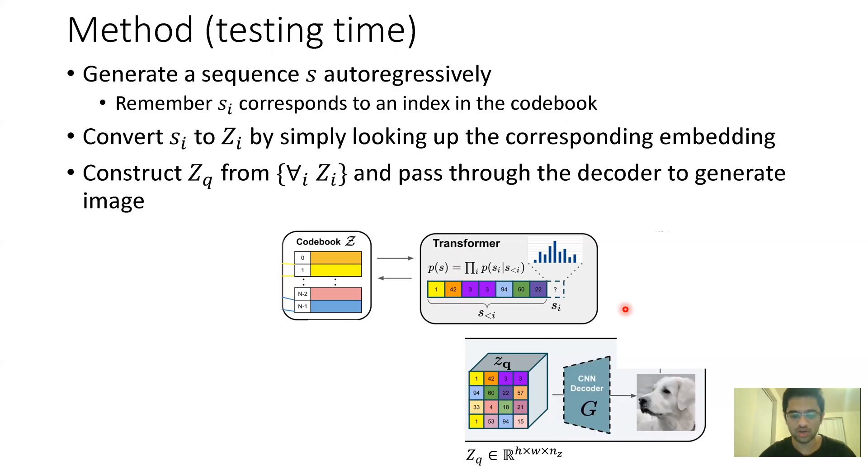At testing time, what you basically can do now, since you have a trained transformer and trained codebook and trained decoder and encoder - well, you don't need the encoder in testing time because you don't get any input - what you basically do is you sample from the transformer. You generate a sequence from the transformer autoregressively, convert that sequence into a Z sub Q type style. The transformer will generate indexes, so it will generate 1, 42, 3 for example. When you convert it to this latent space, instead of 1 you will put the first vector, for 42 you will put the 42nd vector. You pass that to the decoder, the decoder hopefully will generate a nice image.